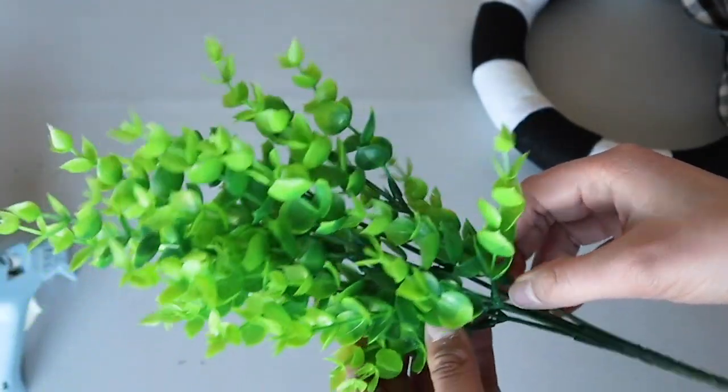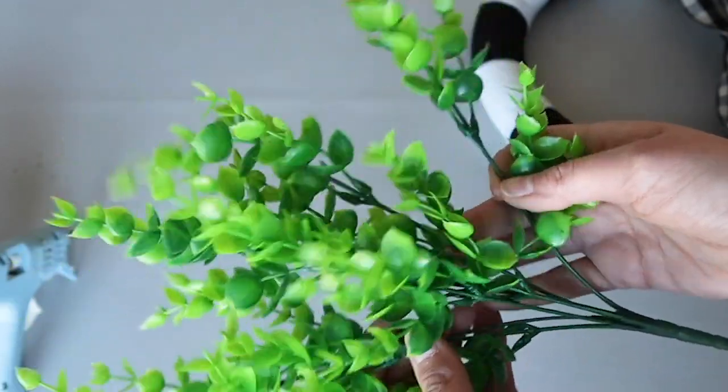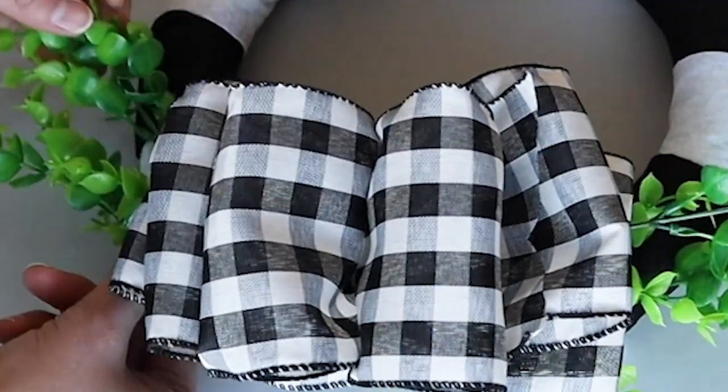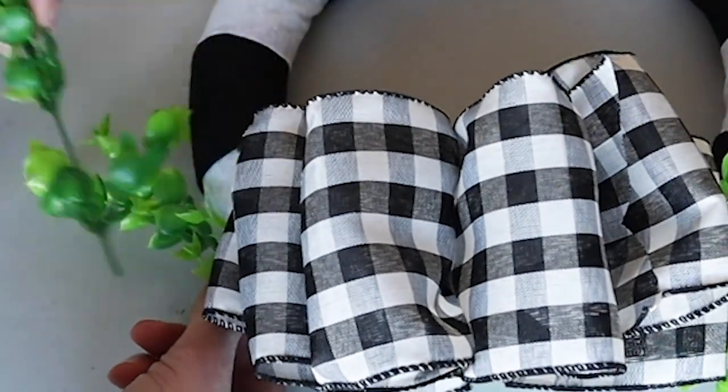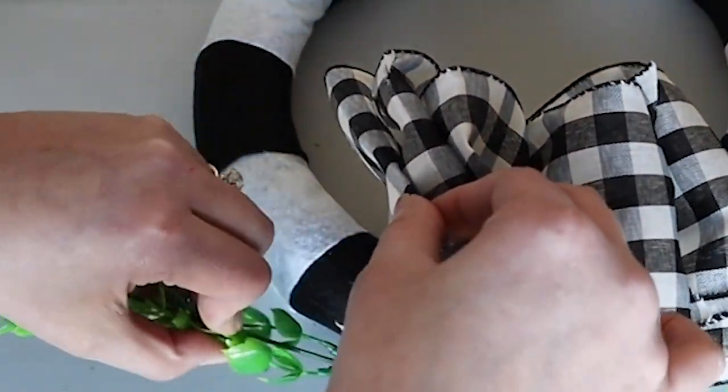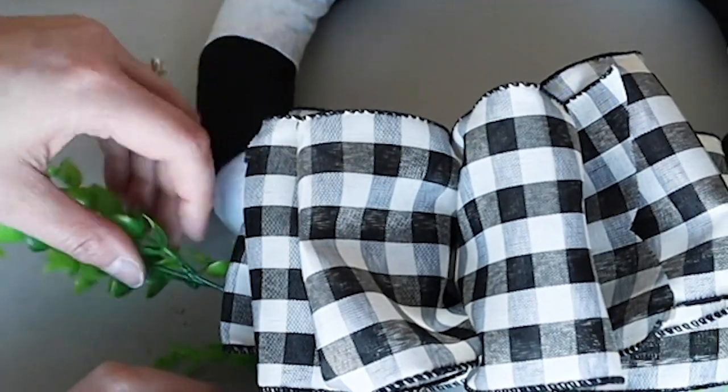I added a few sprigs of greenery on either side of the bow. The black, white, and green really go so well together. Let me know what you think of this color combination in the comment section below. I just love hearing from you guys.